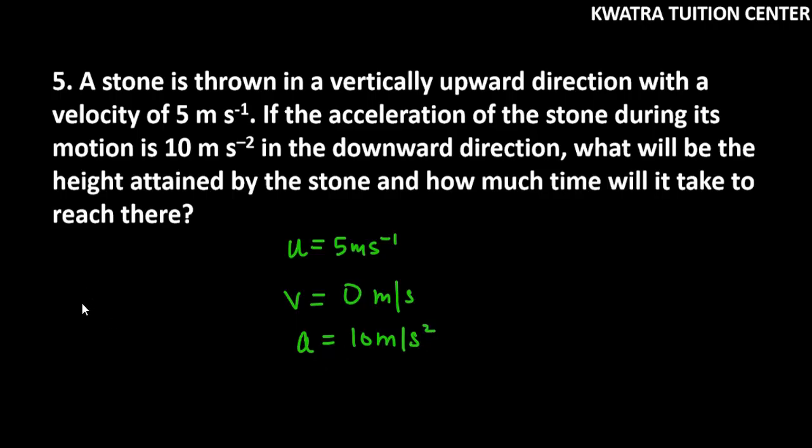So if acceleration in downward direction is 10 meters per second squared, then if it goes up, if we talk about upward direction, it will be the opposite. Acceleration in upward direction is the opposite of it, so it is -10 meters per second squared.